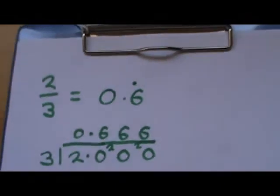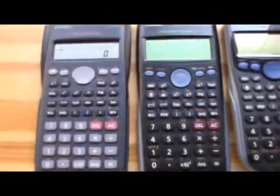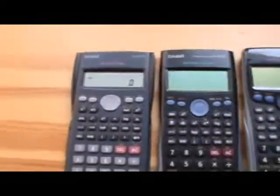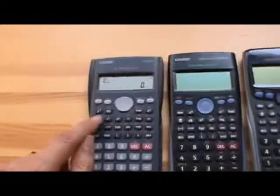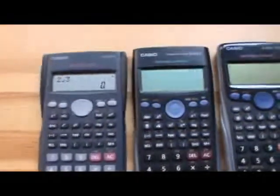Let's see how these three calculators handle this sum. Here's the first one, the oldest one. It's got an ABC button. That's the fraction button. So to enter two thirds in this, we go two, ABC, three. Press equals.